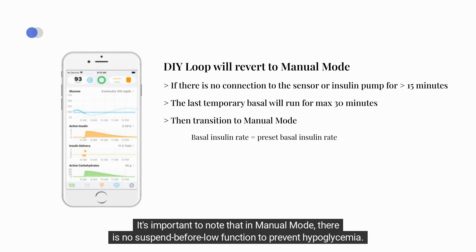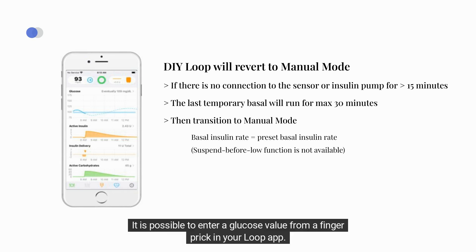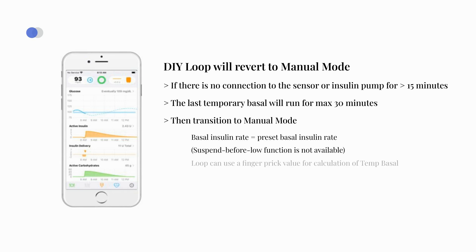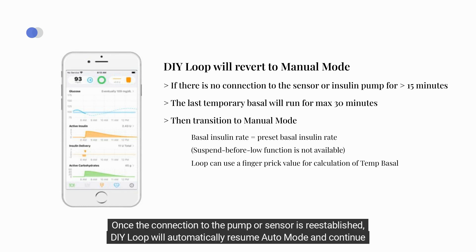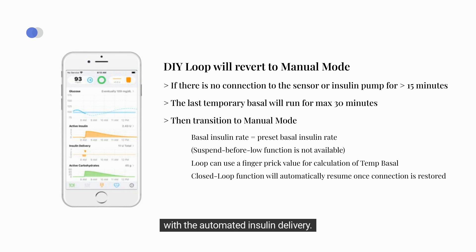It's important to note that in manual mode, there is no suspend before low function to prevent hypoglycemia. It is possible to enter a glucose value from a finger prick in your Loop app — Loop will use this finger prick value for calculating the automated insulin delivery. Once the connection to the pump or sensor is re-established, DIY Loop will automatically resume auto mode and continue with the automated insulin delivery.